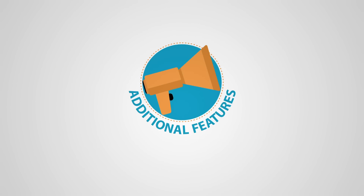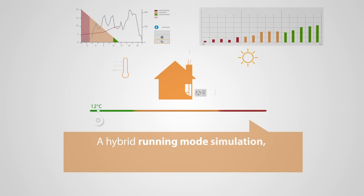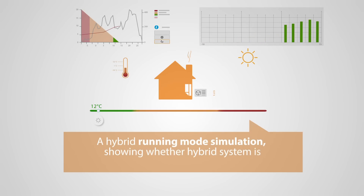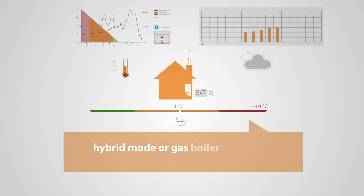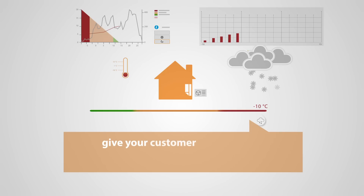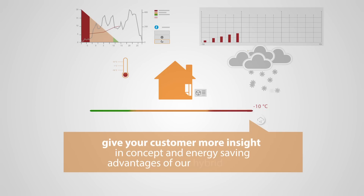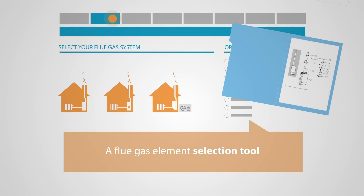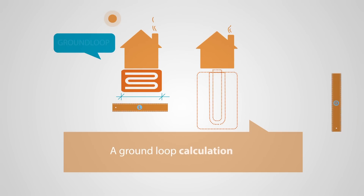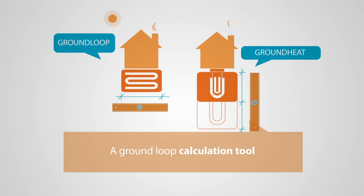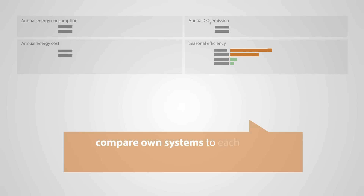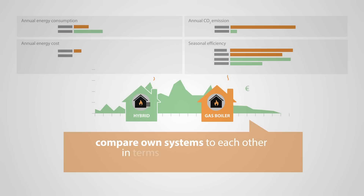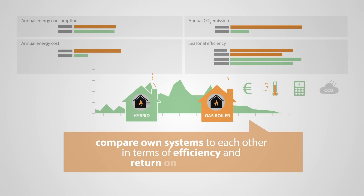And it still doesn't stop there. The software offers even more selective features, such as a hybrid running mode simulation showing — in function of the ambient temperature — whether the hybrid system is running in heat pump mode, hybrid mode or gas boiler only mode. This will give your customer more insight into the concept and the energy saving advantages of our hybrid system. There's a flue gas element selection tool, a ground loop calculation tool for our ground source heat pump, and a tool to compare systems to each other — for example, compare our hybrid with our gas boiler in terms of efficiency and return on investment.